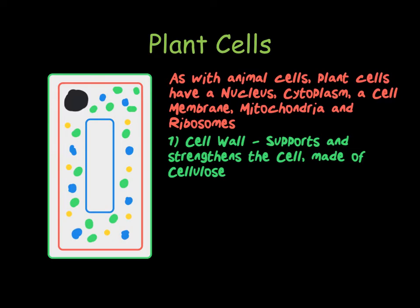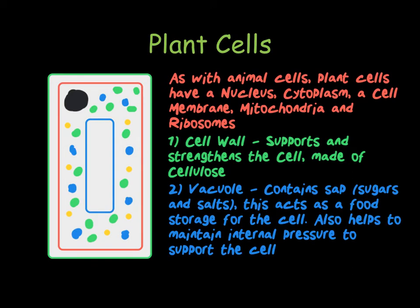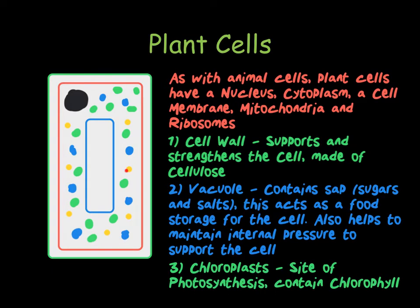We also, in the middle of the cell, have a vacuole. This contains the sap and the sugar of the cell — it's a weak solution of sugar and salts. It helps to maintain the internal pressure to support the cell and also provides the cell with a source of food. Finally, the green circles are the chloroplasts. This is where photosynthesis happens, which makes food for the plant. They contain a green substance called chlorophyll, which is why they appear green and why green plants appear green.